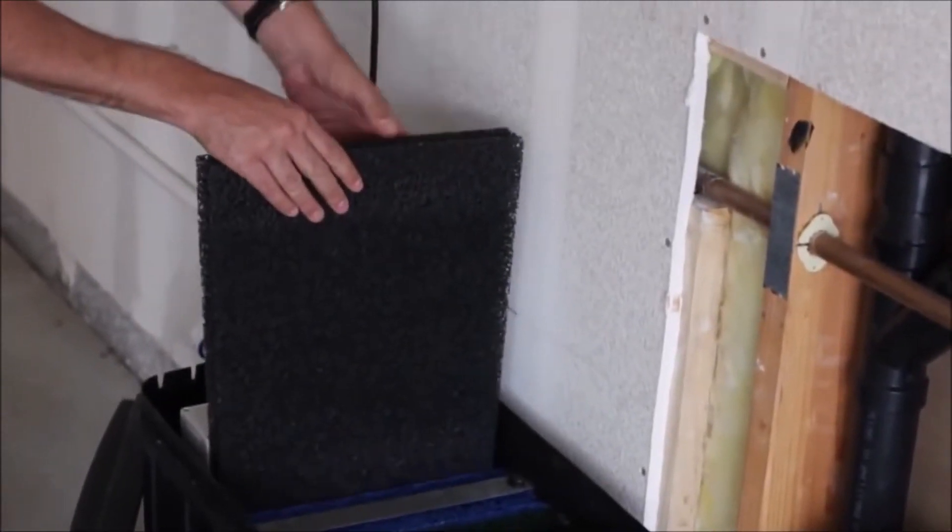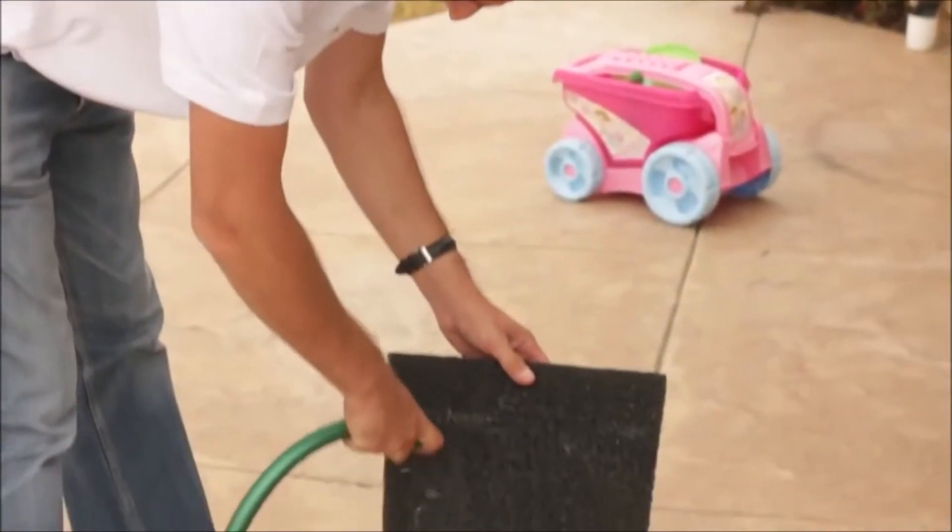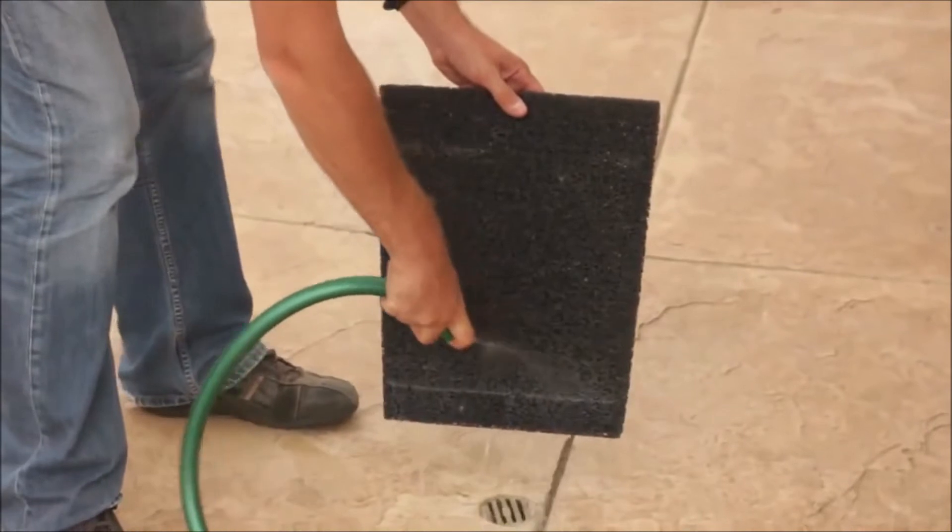The maintenance of the Aqua2Use is simple. Every four to six months, depending on how much greywater you use, you will simply need to hose down the filters.